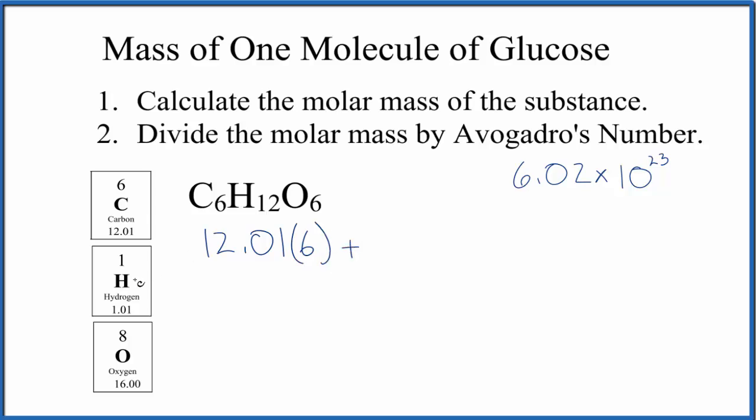So we multiply that by six, plus hydrogen, 1.01, we have 12 hydrogens, and then oxygen, 16.00, and we have six of those. So we multiply and then add, we get 180.18 grams per mole. So that's the molar mass for glucose.